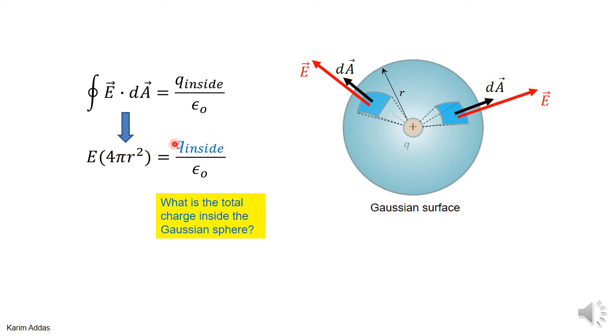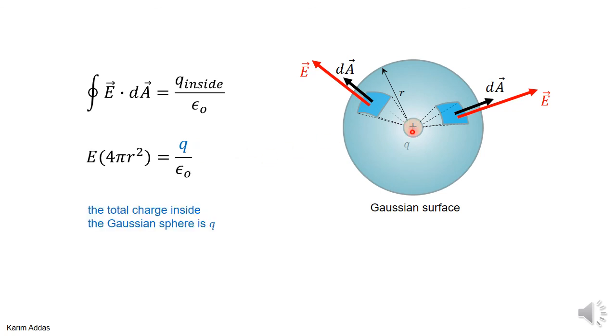What about the right-hand side of Gauss's law? The right-hand side of Gauss's law is asking to find, tell me, what is the charge inside the surface. Well, how much charge is inside the surface? The charge inside the surface is just q. So that means I put here q. So this is the final expression from which we can get the electric field.